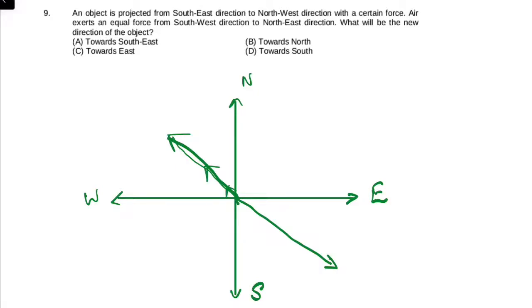And it's saying that air exerts an equal force from southwest direction to northeast direction. So southwest is this point, so from here equal air pressure is applied in this direction, from southwest towards northeast.